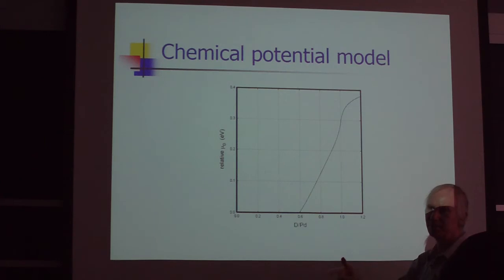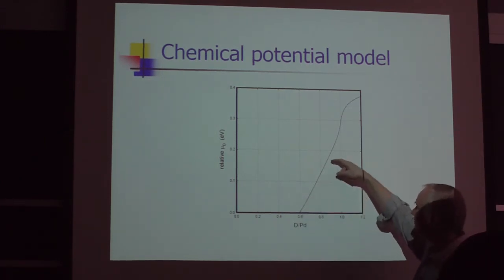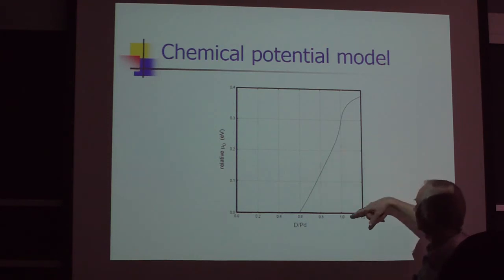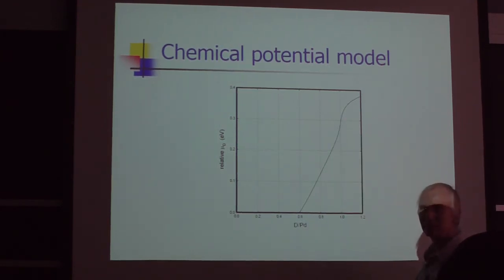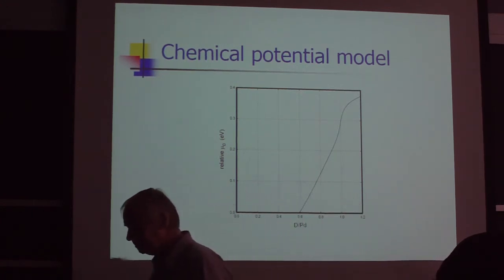And here's a reconstruction from my models and calculations of the relative chemical potential of deuterium. So I referenced it to zero in the miscibility gap. And it goes up and goes up. So between zero and a loading of one, it's somewhere under 300 millivolts. And at 1.2, you've got to go up 380 millivolts or so.